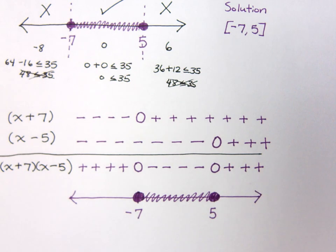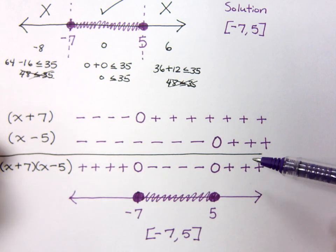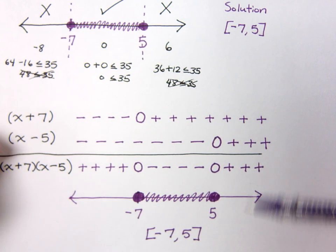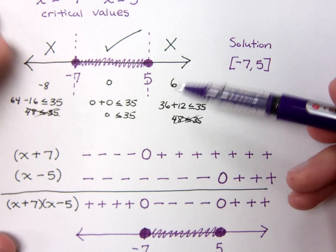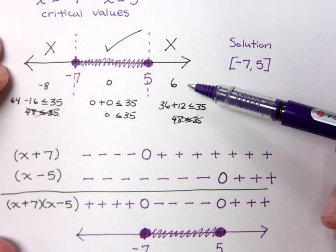So, we still have the same solution set that we had above, which is from negative 7 to positive 5. So, you can do it based on the signs of the different factors that you have in your polynomial. Or, you could do what I did up here and just pick these test values to see what works for each of these intervals.